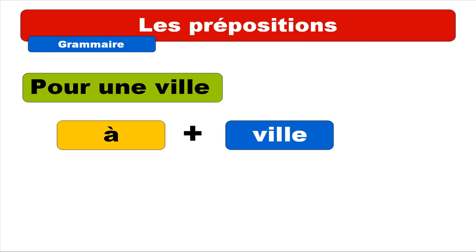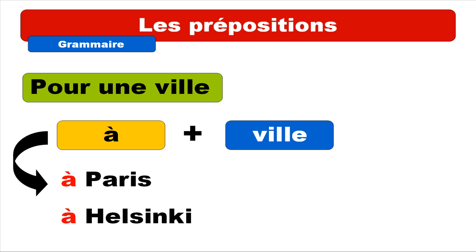Let's start with a town. If you want to introduce a town — pour une ville — then you will have to use the preposition À, and then just put the town. So for example: À Paris, À Helsinki. It's actually quite simple.